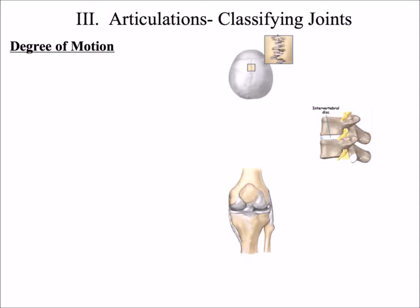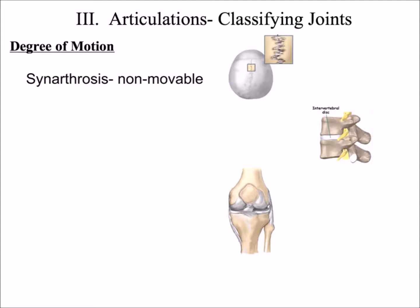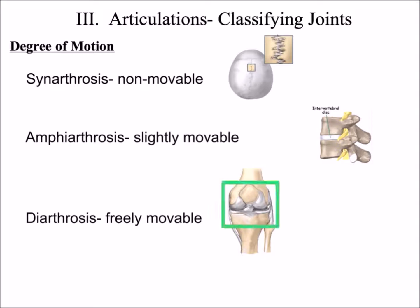To classify a joint by the degree of motion, we look at the amount of movement the joint can perform. There are three classifications. The first is synarthrosis, or immovable joints — an example being the bones of the skull. The second is amphiarthrosis, or slightly movable joints — for example, the vertebrae of the vertebral column. The last is diarthrosis, or freely movable joints, such as the knee.